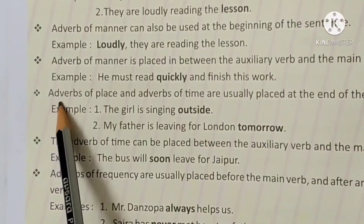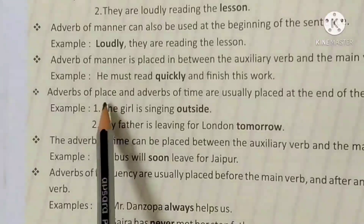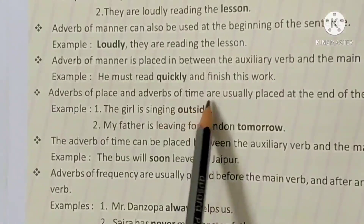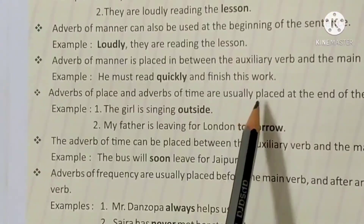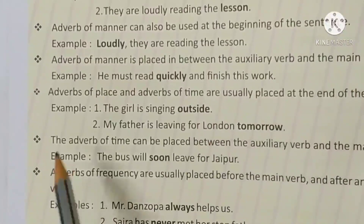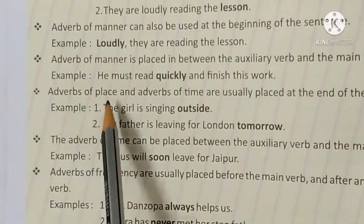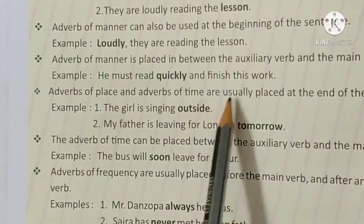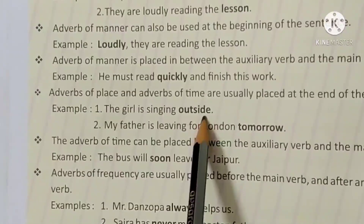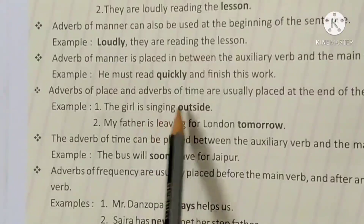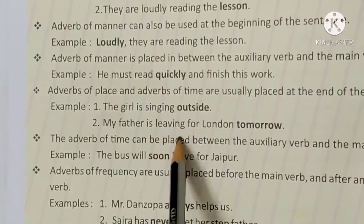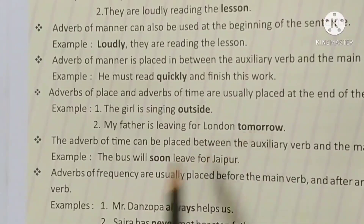Next point: adverbs of place and adverbs of time are usually placed at the end of sentences. Adverb of place और adverb of time हमेशा sentence के end में यूज किया जाता है। Examples: 'The girl is singing outside.' 'My father is leaving for London tomorrow.'